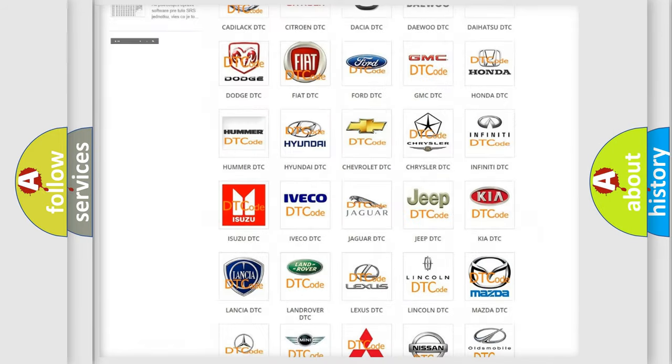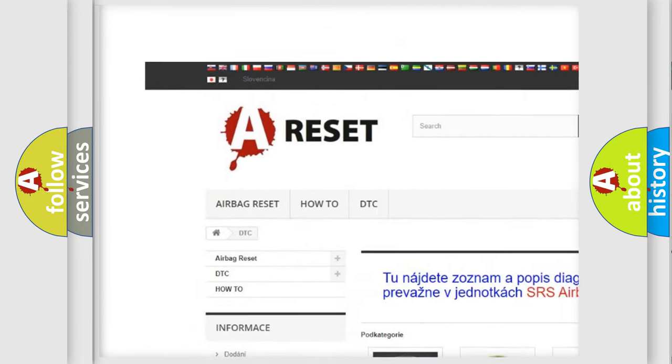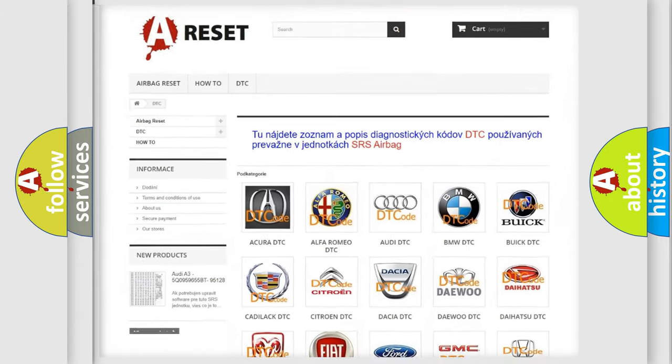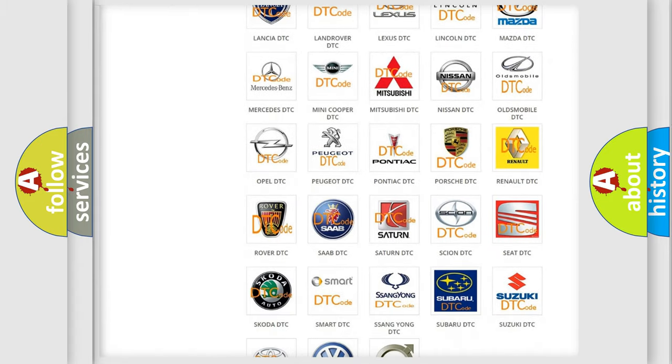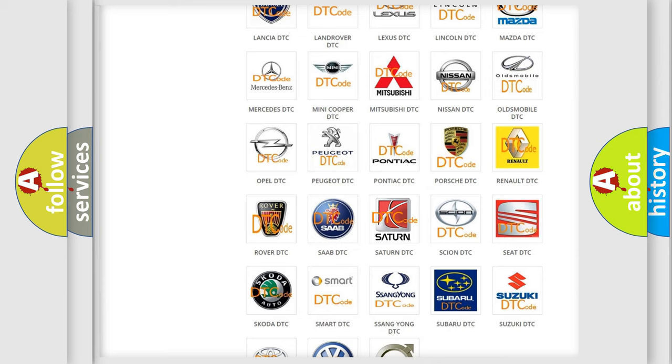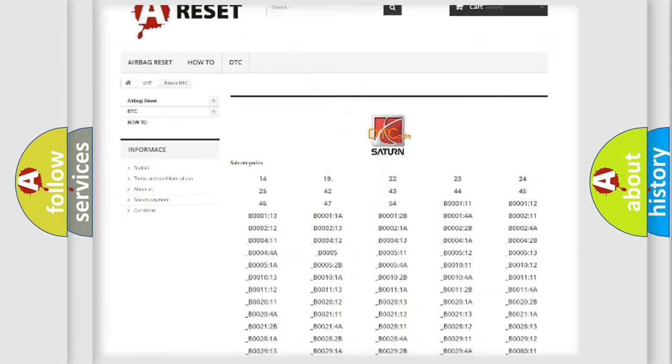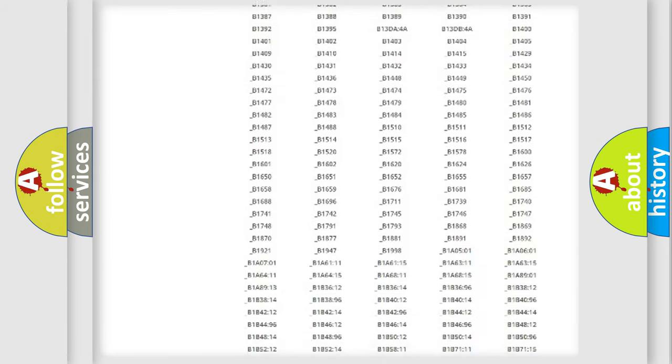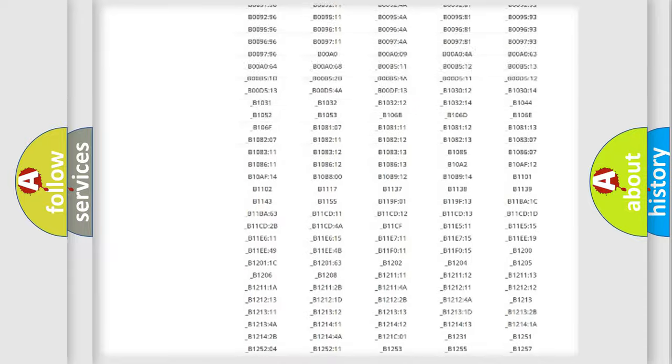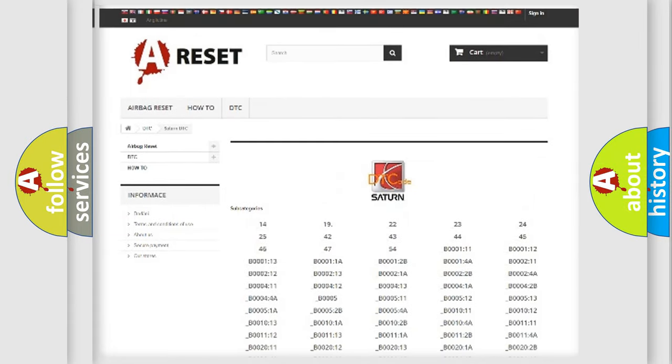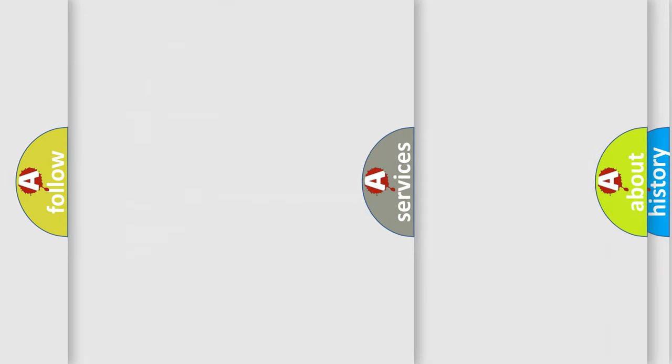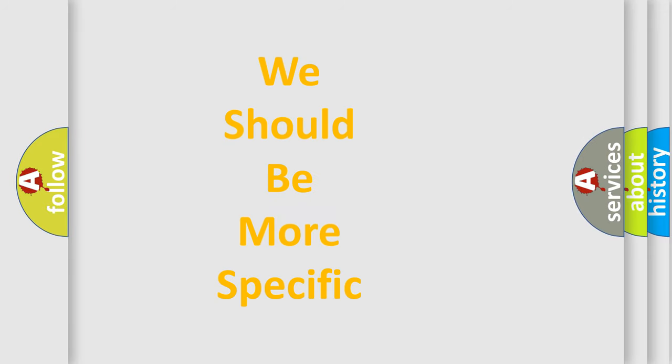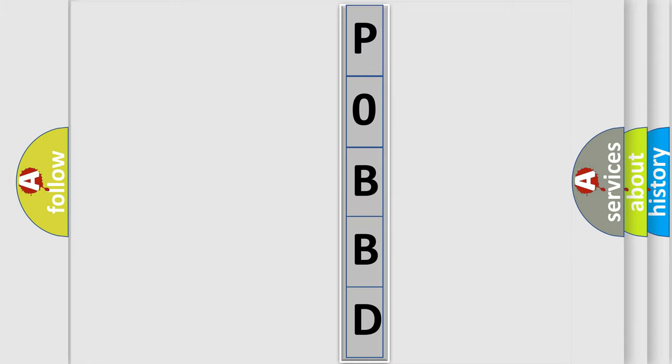Our website airbagreset.sk produces useful videos for you. You do not have to go through the OBD2 protocol anymore to know how to troubleshoot any car breakdown. You will find all the diagnostic codes that can be diagnosed in Saturn vehicles, and also many other useful things. The following demonstration will help you look into the world of software for car control units.